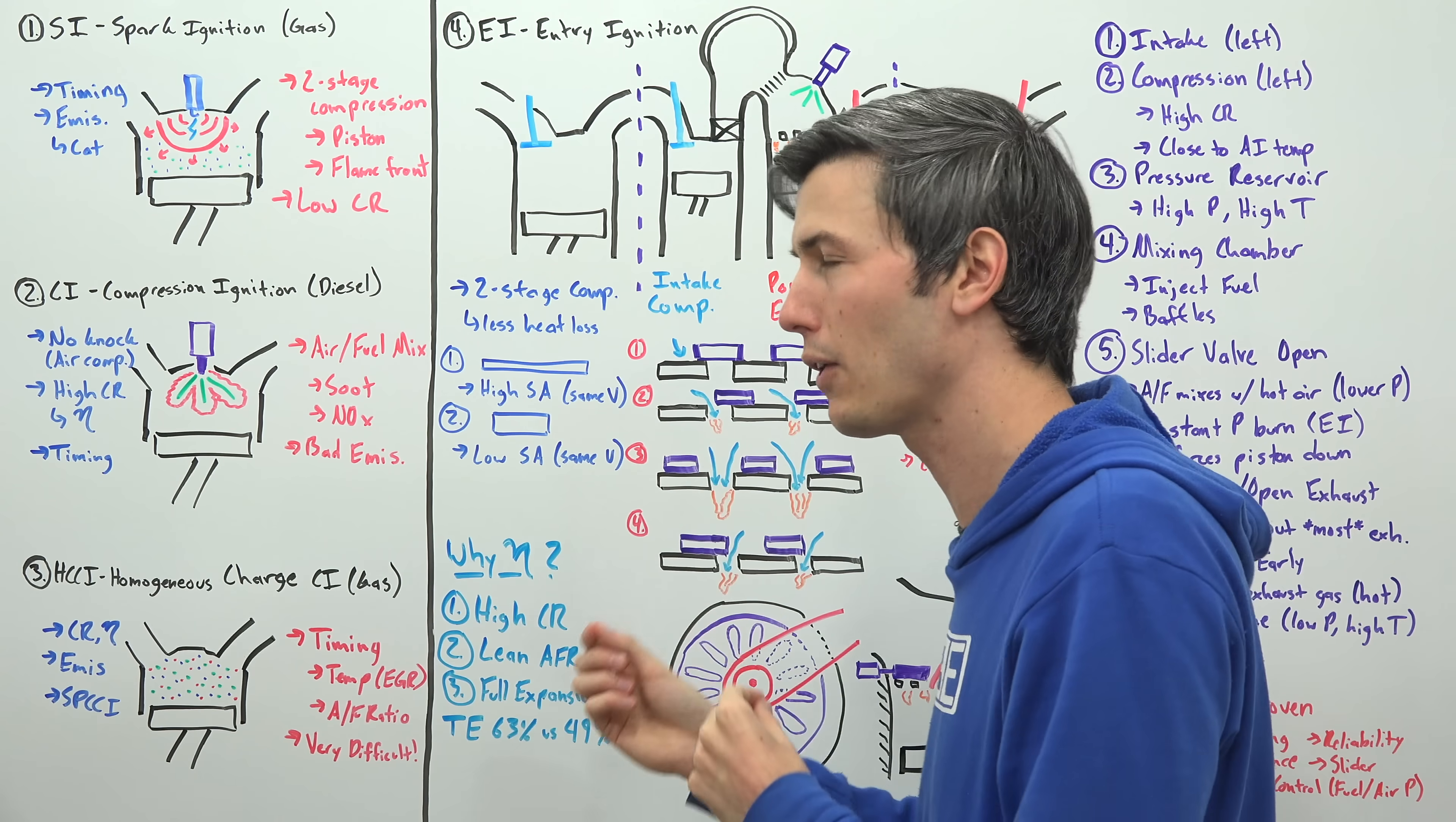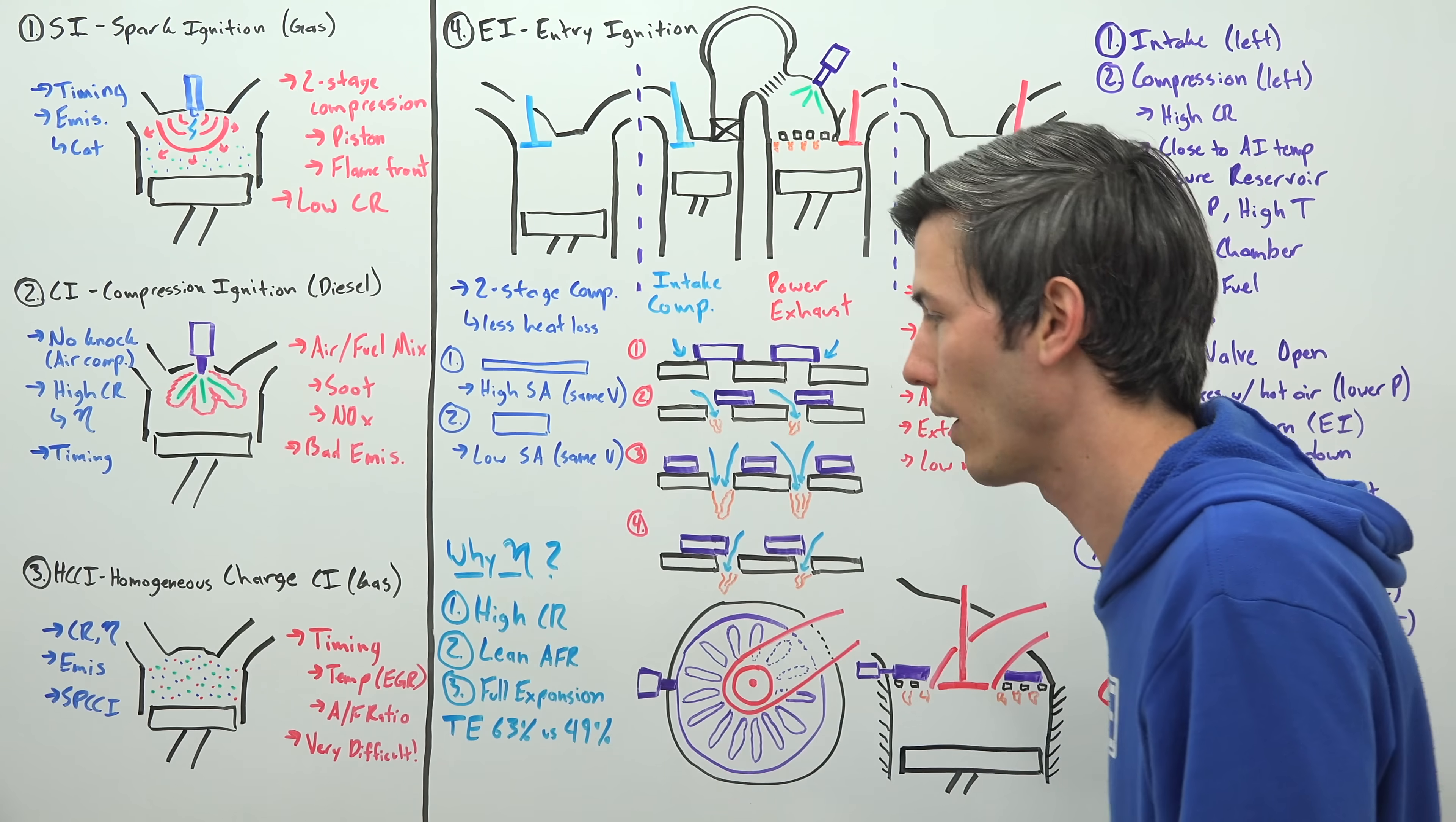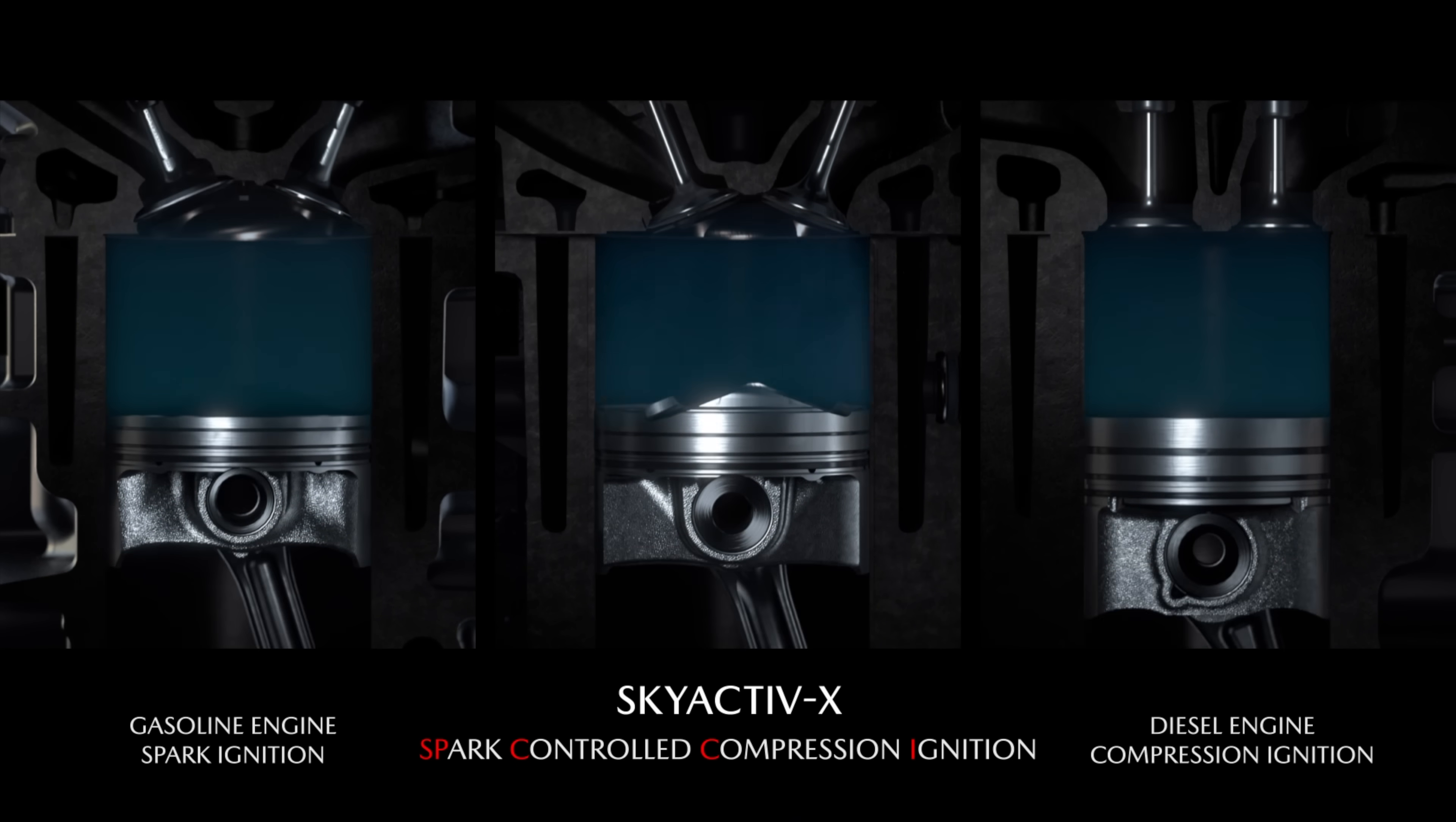The challenge here is we have very limited ways in order to control timing. So with our spark ignition, our spark is controlling when does that combustion start. With our compression ignition, when we inject fuel controls when does that combustion start. With homogeneous charge compression ignition, we don't have that control lever of our fuel injection or our spark plug. So you have to rely on air fuel ratios and using EGR to regulate the temperatures in order to control when does combustion actually start. So it's very difficult to control when combustion starts and as a result, the closest thing we have to this today is Mazda's SPCCI engine, which still uses a spark plug.